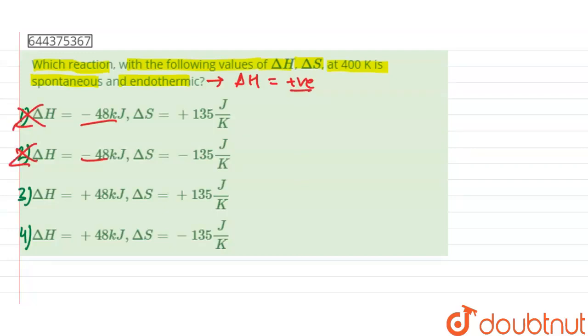Now for spontaneity we have to check the value of delta G. Delta G is given as delta H minus T delta S. For spontaneous process, delta G should be negative.